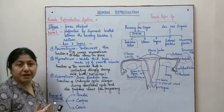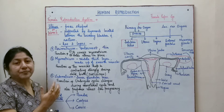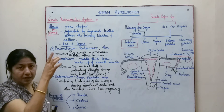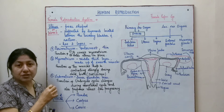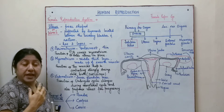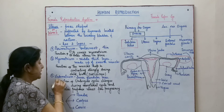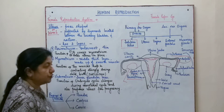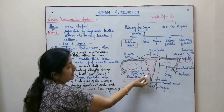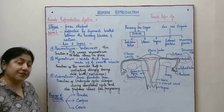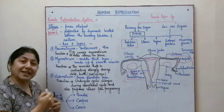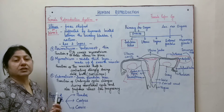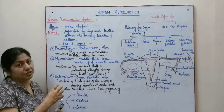So the outer layer, the perimetrium, is protective in nature and keeps the uterus in place, while the myometrium is thick, highly muscular, and made up of smooth muscle cells that assist during childbirth. The innermost layer is the endometrium. These are the three layers of the uterus. The endometrium undergoes cyclical, periodic changes during the menstrual cycle.